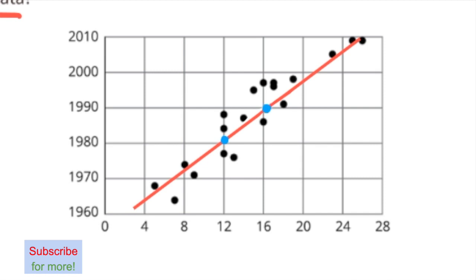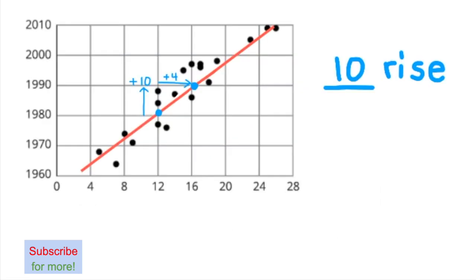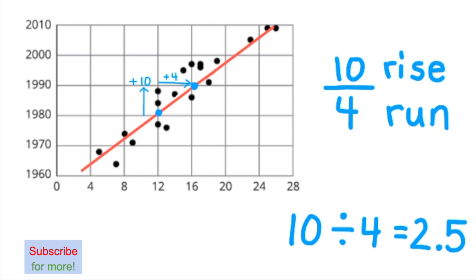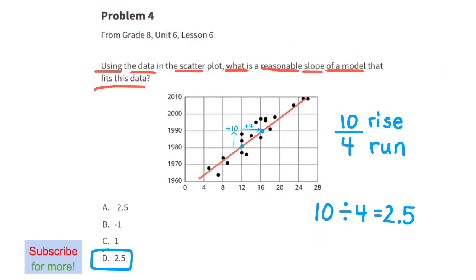This line also almost goes through the intersection of 16 and 1990, so we place a point there too. To find the slope, we use rise over run. The rise goes from 1980 to 1990, so the rise is +10. The run goes from 12 to 16, which is +4. So the slope is 10 over 4, and since 10 divided by 4 is 2.5, the slope of this line is approximately 2.5.